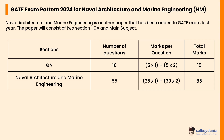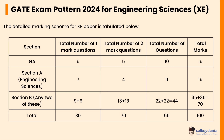Let's check the GATE exam pattern 2024 for Naval Architecture and Marine Engineering, another paper added to the GATE exam. The paper consists of two sections: GA and main subject. The GA section includes 10 questions for 15 marks (five one-mark and five two-mark). The main subject section includes 55 questions for 85 marks (25 one-mark and 30 two-mark questions).